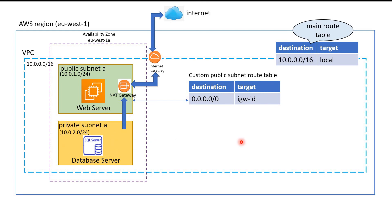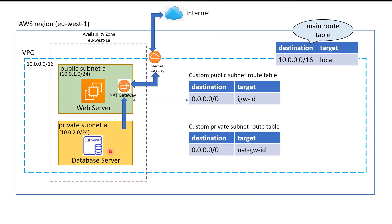The private subnet is still associated with the main route table, which only has routes to the local network. So we need to create a new route table. We will create a custom private subnet route table and associate it with our private subnet. In this route table, the destination is the internet (0.0.0.0/0) and the target is the NAT gateway ID. Using this route table, resources in the private subnet will be able to access the internet through the NAT gateway.